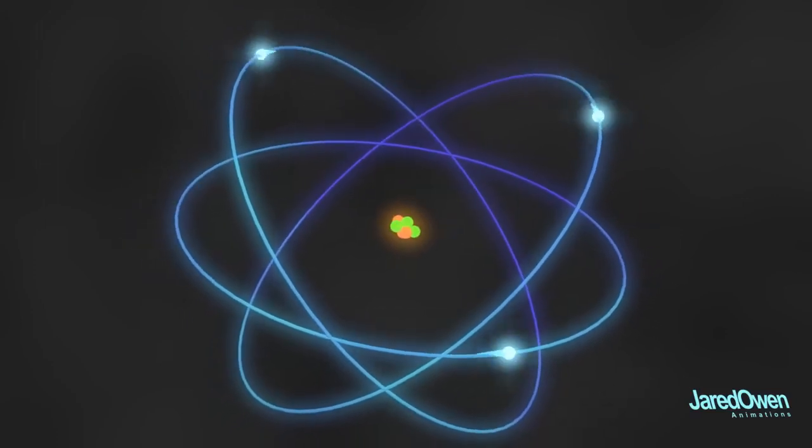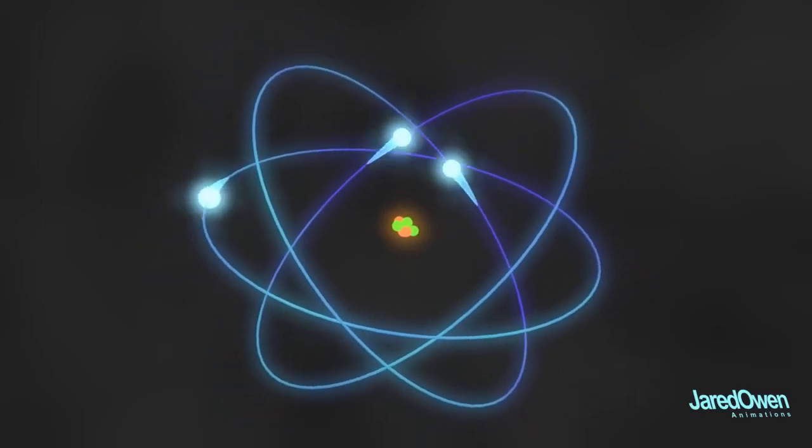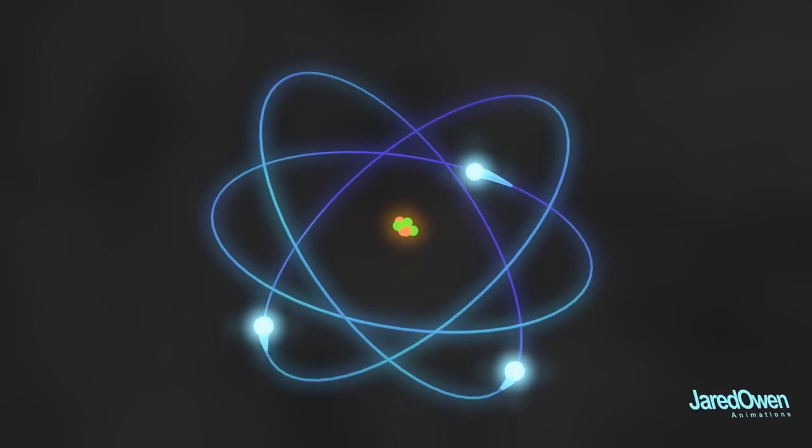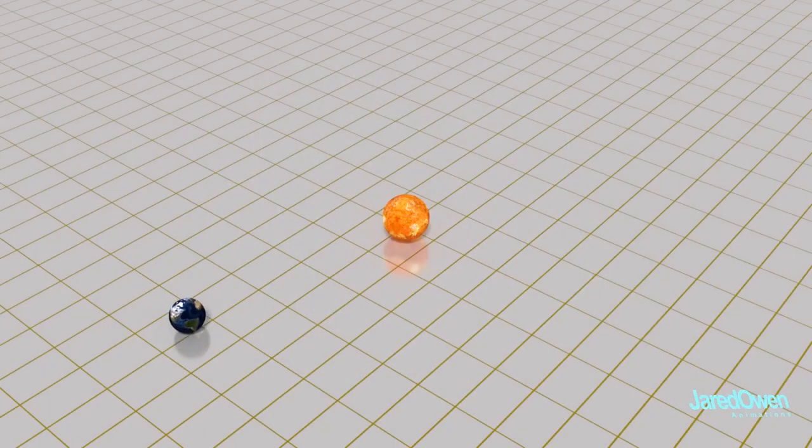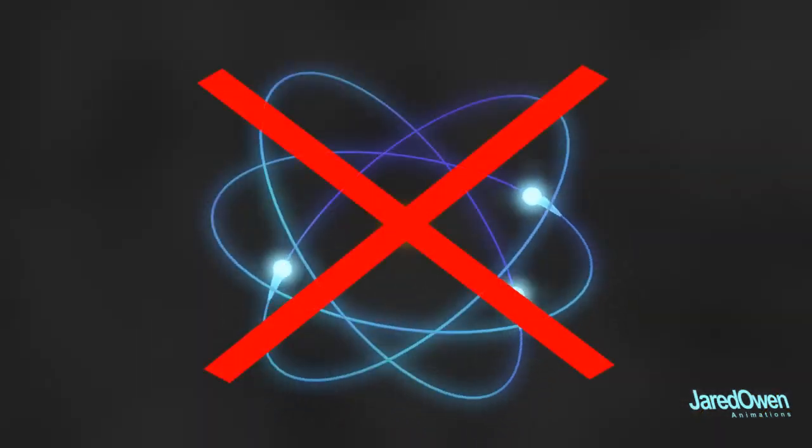The same thing with these electrons. Another thing that's inaccurate is that electrons orbit the nucleus just like a planet orbits a star. Unfortunately, this is still taught in many textbooks, but it's just not correct.